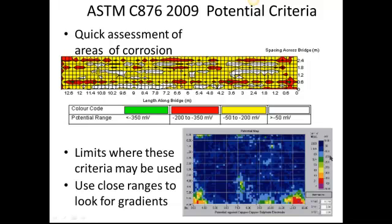Half-cell potential testing can be done with mapping using either the KANAN or the ChoroMap. As we can see here, we have a map where the yellow areas mean potential corrosion, with low negatives from minus 50 to minus 200. The white areas, greater than minus 50, would mean no corrosion under standard assumptions — though you need to make your own assumptions for each structure you look at. When you're getting to the green or red areas, you're seeing areas where it's very likely corrosion has begun. You're looking for hot spots — establish the baseline of your structure, then look for areas more negative than that.